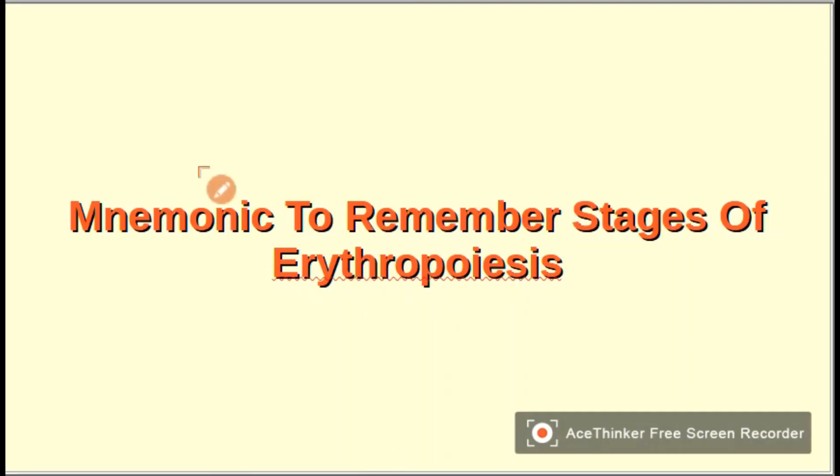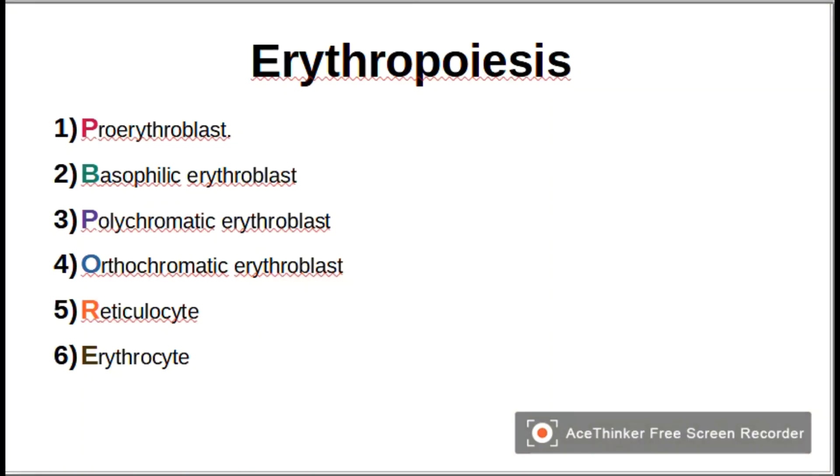Hi, how are you? Today I gave you a mnemonic to remember the stages of erythropoiesis. There are six stages of erythropoiesis: proerythroblast, basophilic erythroblast, polychromatic erythroblast, orthochromatic erythroblast, reticulocyte, and erythrocyte. Let's take a small view on all six stages.